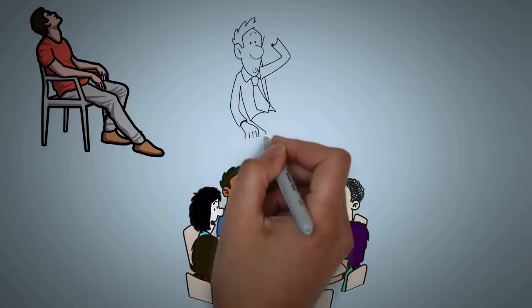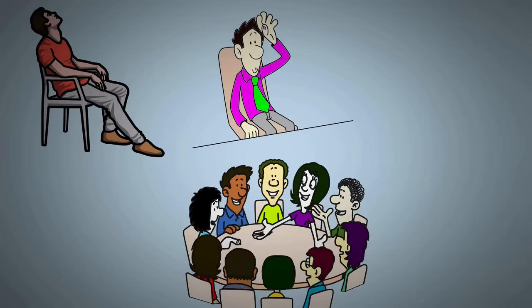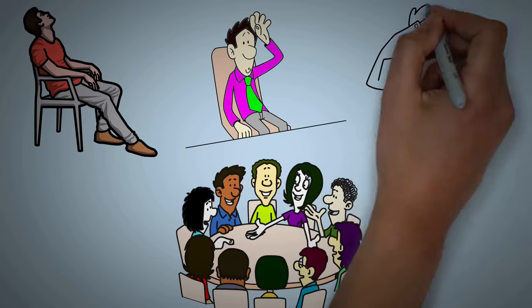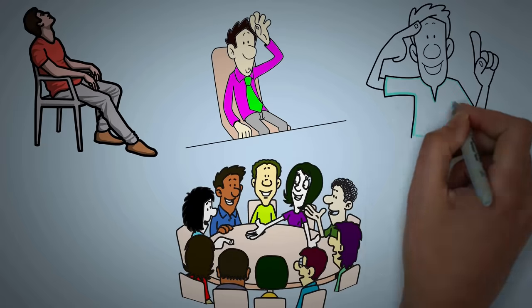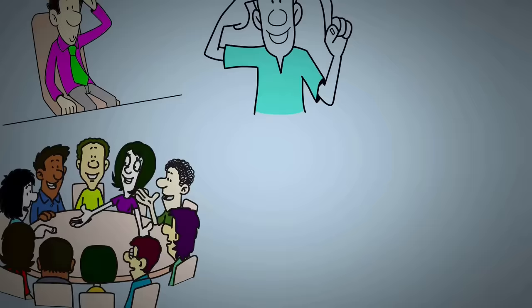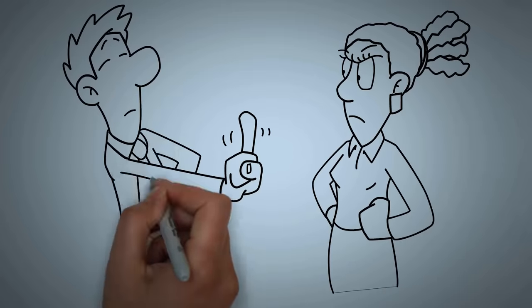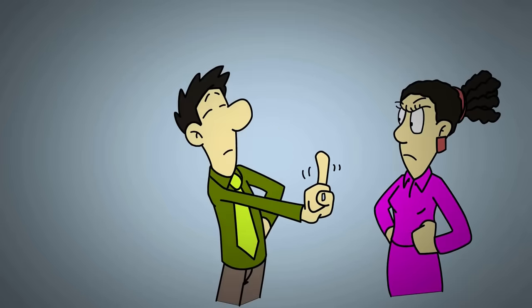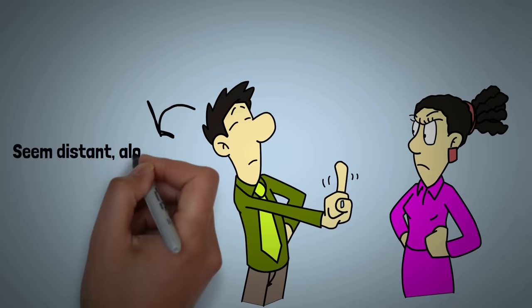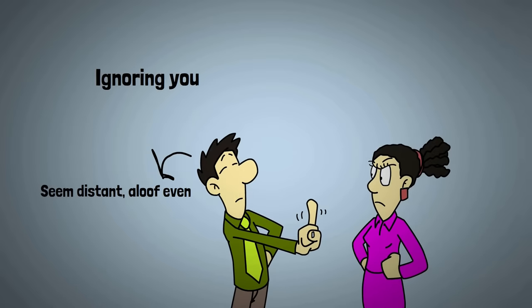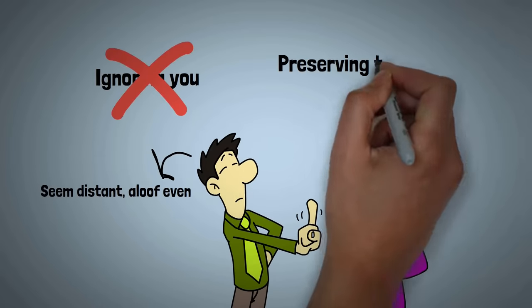The hustle and bustle of constant interaction can get overwhelming for them. And when that happens, they might just retreat into their own minds. Now, if someone barges into their thinking time, well, that's like disrupting their mental orchestra. They might seem distant, aloof even. It's not about ignoring you. It's about preserving their mental sanctity.